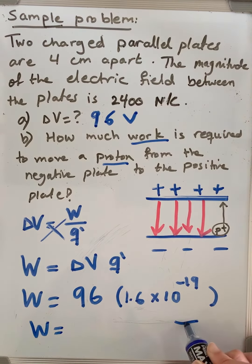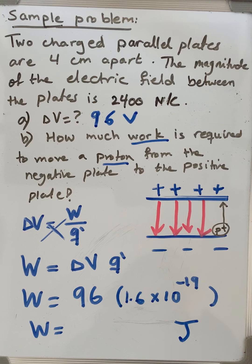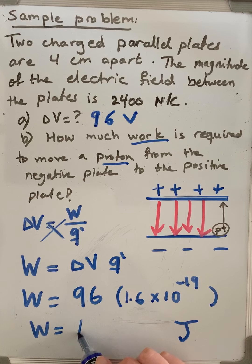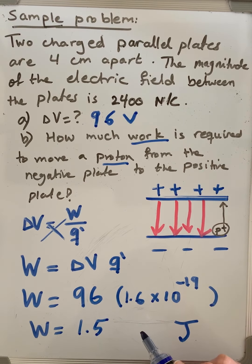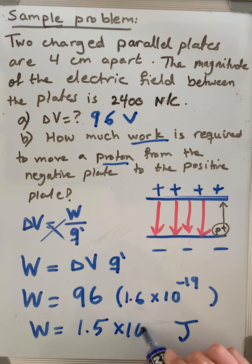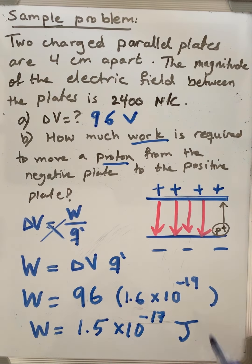Then, you will find the product of these two numbers. The unit for work is joule. Now, I'm calculating it quickly. It's 1.5 multiplied by 10 to the power negative 17 joule. This is the work required to move a proton toward the positive charge.